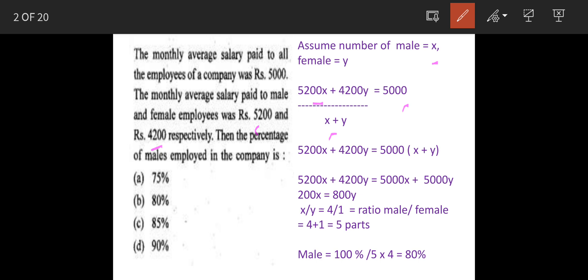When we solve this, we get the ratio of x to y as 4 is to 1, that is the ratio of male to female. So 4 to 1 means there are total 5 parts, because 4 plus 1 equals 5 parts.